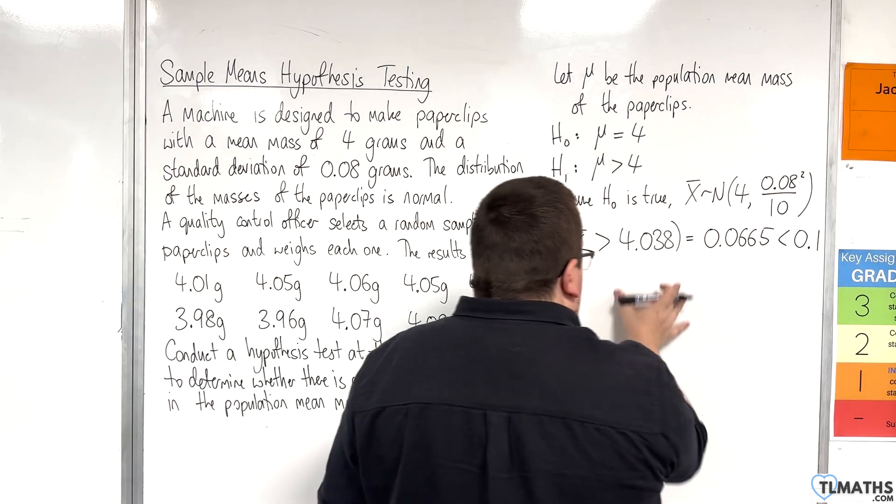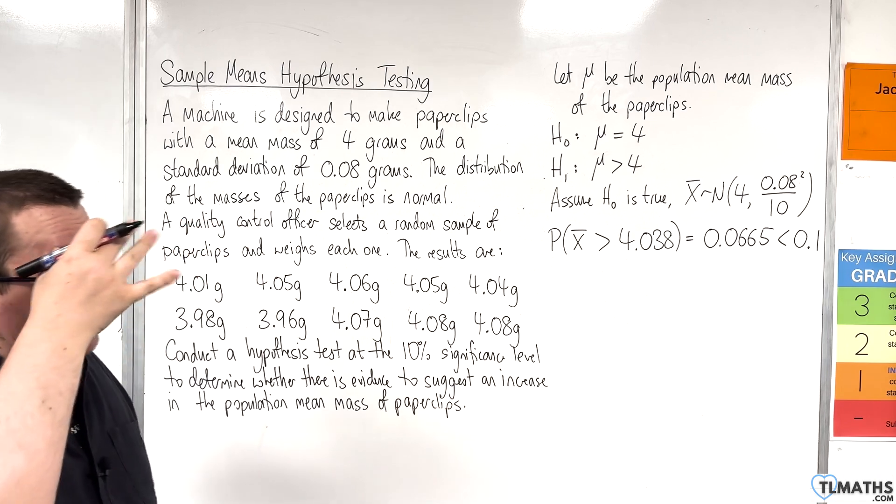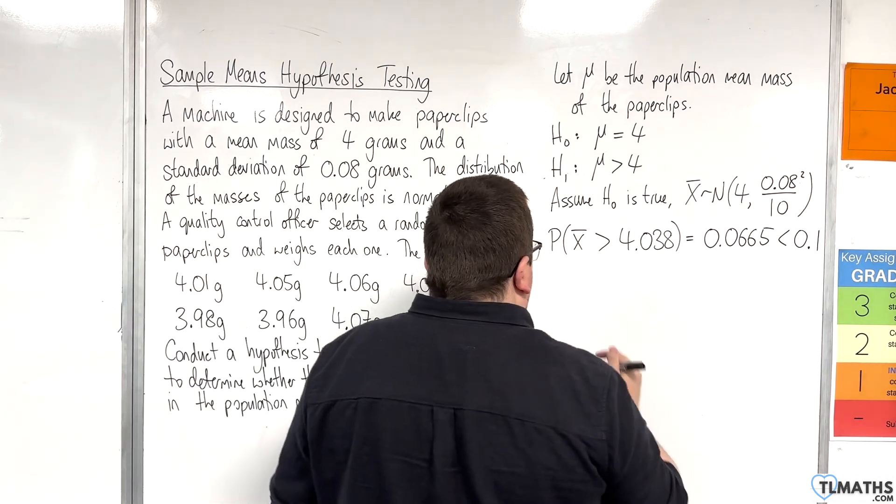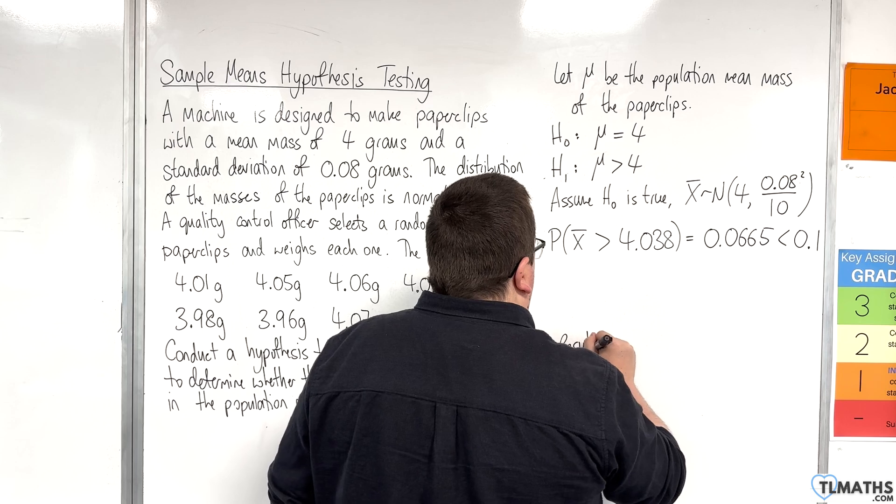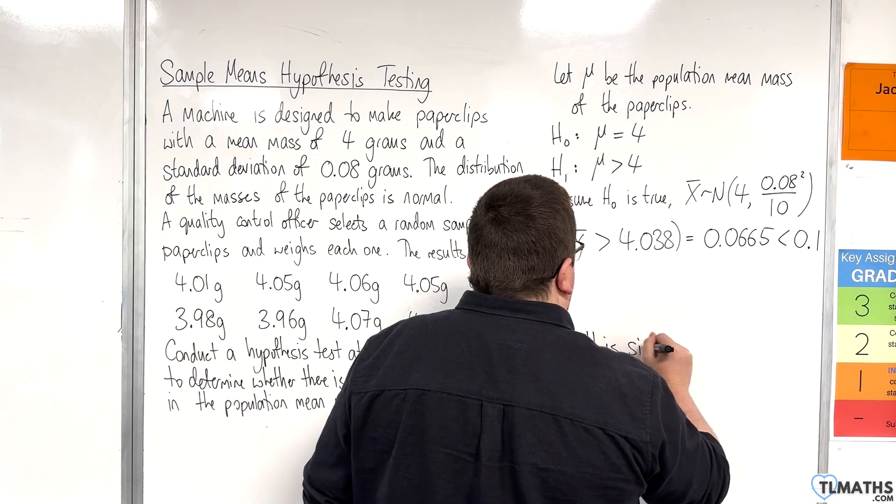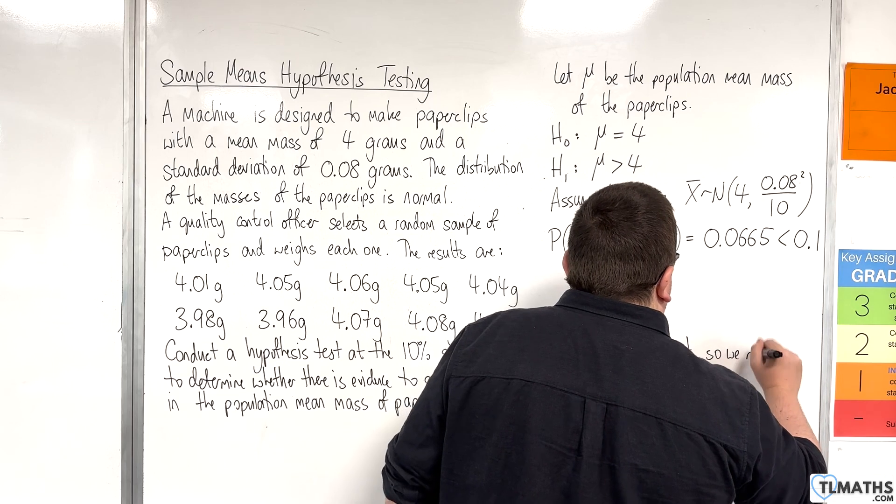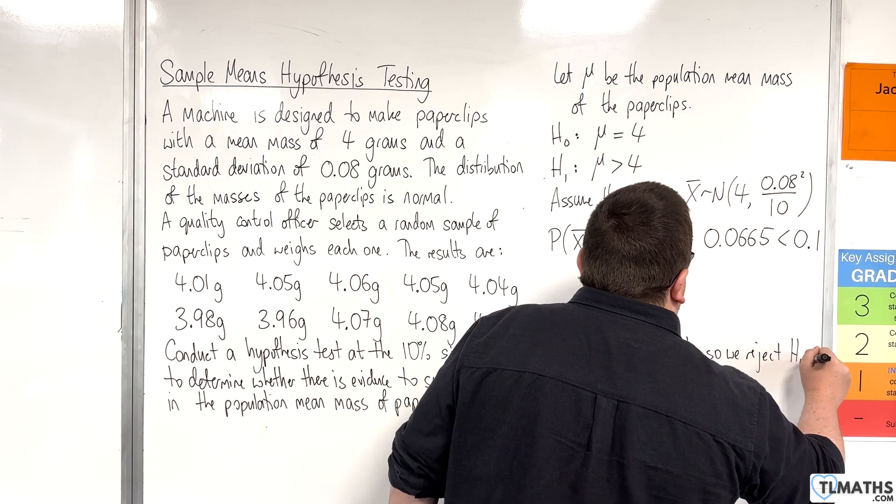I'm going to leave a space because I'll need to use that later for other methods. The result is significant, so we reject H₀.